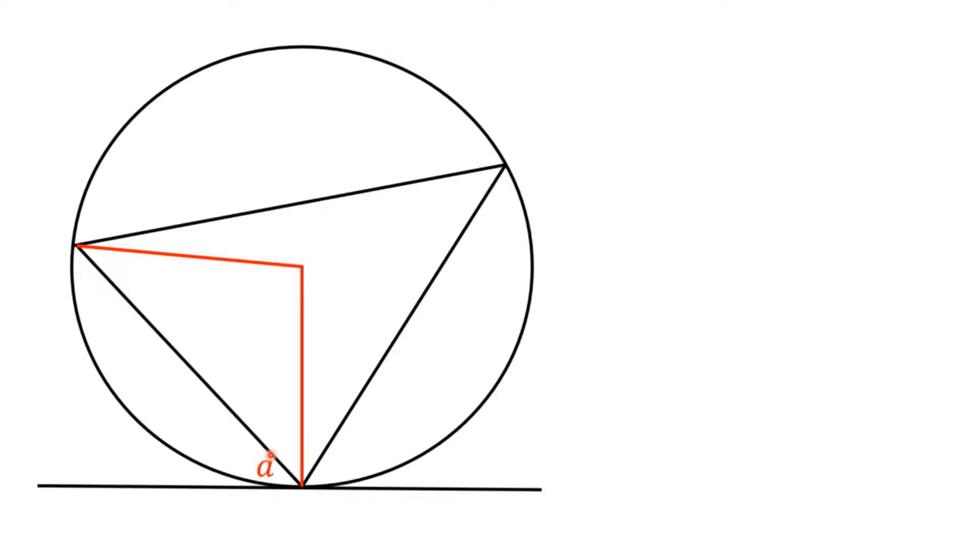Now, what my theorem is telling me is that in theory, this angle here, A, should be the same as this angle over here. That's what I'm hoping it's going to tell me. But of course, I can't assume that, I have to prove it.